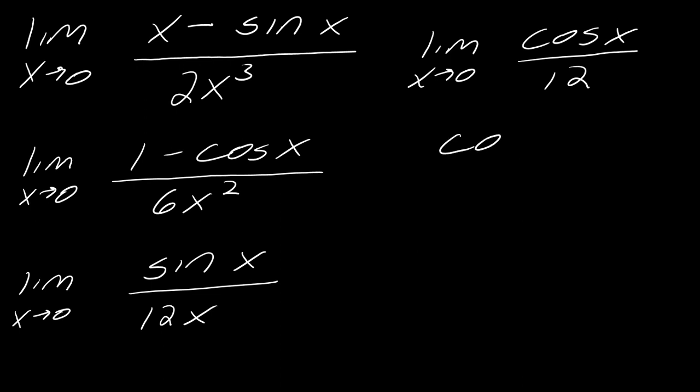This is going to give me cos(0) over 12, which is just equal to 1 over 12. And, so, you know, we had to take a few derivatives, but no problem.